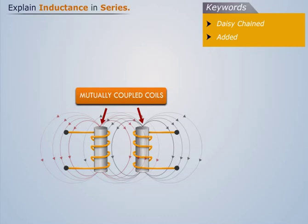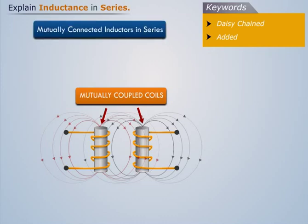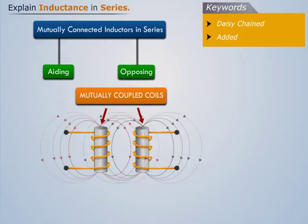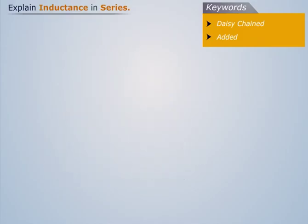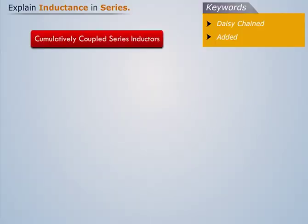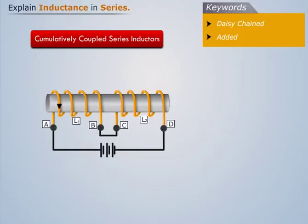Mutually connected inductors in series can be classed as either aiding or opposing the total inductance depending whether the coils are cumulatively coupled or differentially coupled. Now let's discuss cumulatively coupled coils. If the magnetic flux produced by the current flows through the coils in the same direction, then the coils are said to be cumulatively coupled.